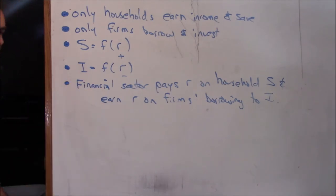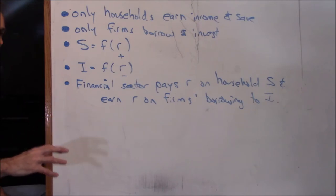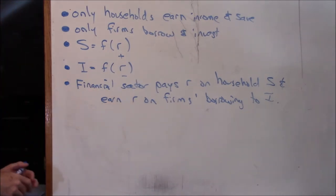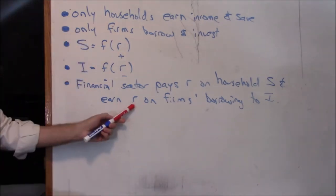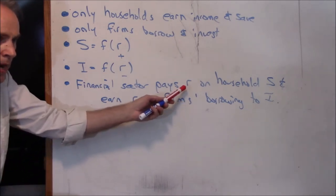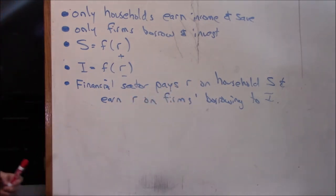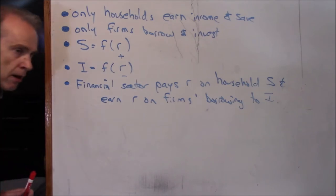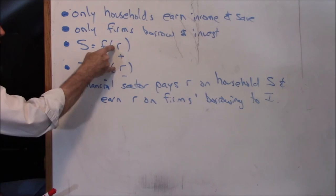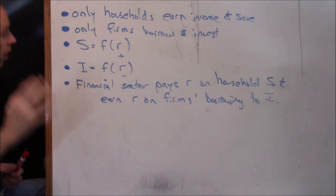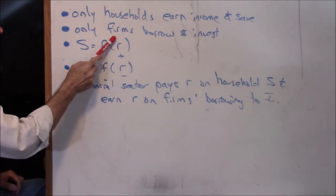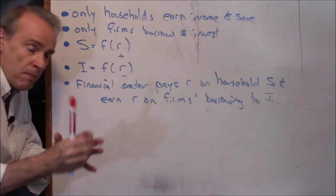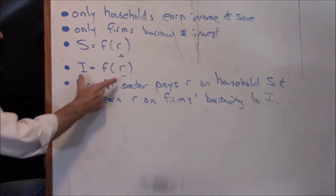Whenever S isn't equal to I, the financial sector has the incentive to make them equal — they don't want money sitting in the vault not being borrowed. And if there's an increase in the demand for investment loans, they want to bring more money in. Of course this interest rate they pay and the one they earn on firm borrowing are not the same — they're making money off the spread — but for our purposes, all we're worried about is movements in the interest rate, and these will move in the same direction.